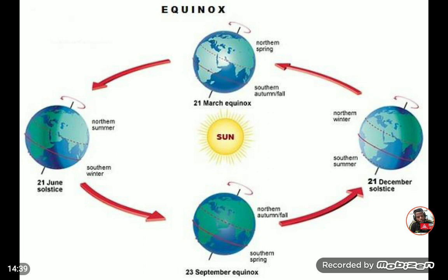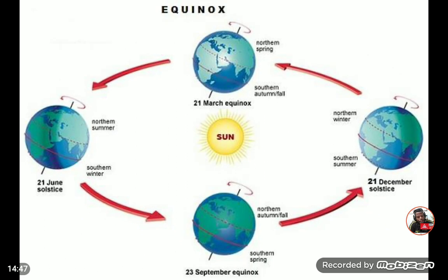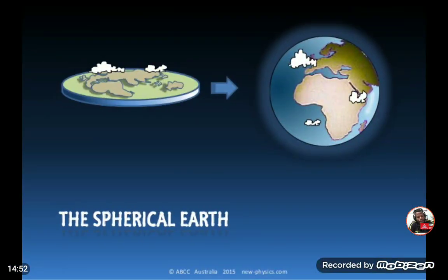Now let's move to the shape of the earth. This is an interesting topic because presently many people have been misguided by conspiracy theories who think the earth is flat. The earth, like all other planets, is ball-like — like a basketball blown up to full capacity. The proper word for that is a spherical object; the earth is therefore a sphere.